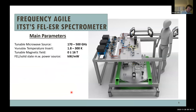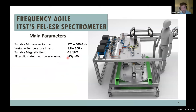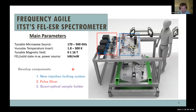To address these issues, we developed a new frequency-agile FEL spectrometer. We can now tune the frequency from 170 to 500 GHz. We have a cryogen-free magnet — before it was a wet magnet — with a cryogen-free insert allowing sample temperatures down to 1.8 K and magnetic fields up to 16 Tesla. This new spectrometer can work in both FEL and solid-state regimes simultaneously. I will now focus on three new parts: the new injection locking system, new quasi-optical design, the pulse slicer, and the quasi-optical sample holder.